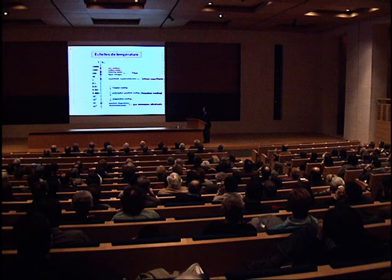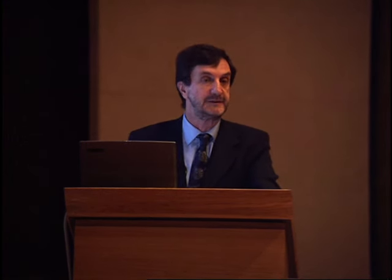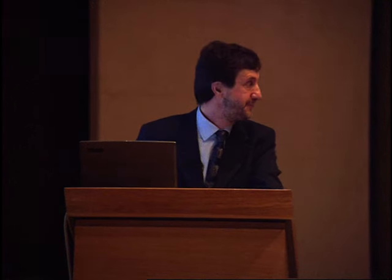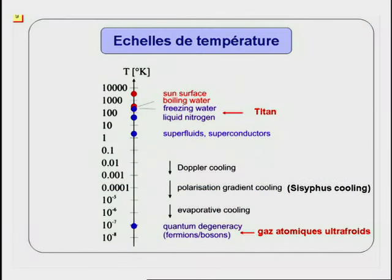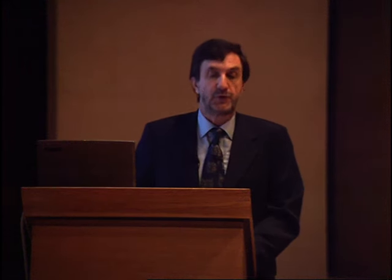Cette figure suggère donc les difficultés formidables que les physiciens ont dû franchir pour réaliser la condensation de Bose-Einstein. J'ai aussi indiqué ici la température de Titan, le satellite récemment exploré par la mission Huygens. Bien que Titan soit très froid à l'échelle de la température de notre vie quotidienne, sa température est encore trop haute pour la physique des gaz quantiques.